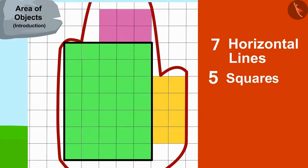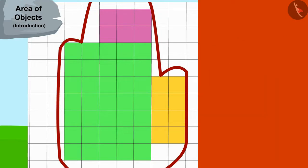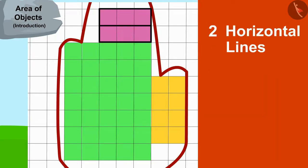This means there are seven times five, or 35 squares in this rectangle. This rectangle has two horizontal lines and each of the lines has three squares.